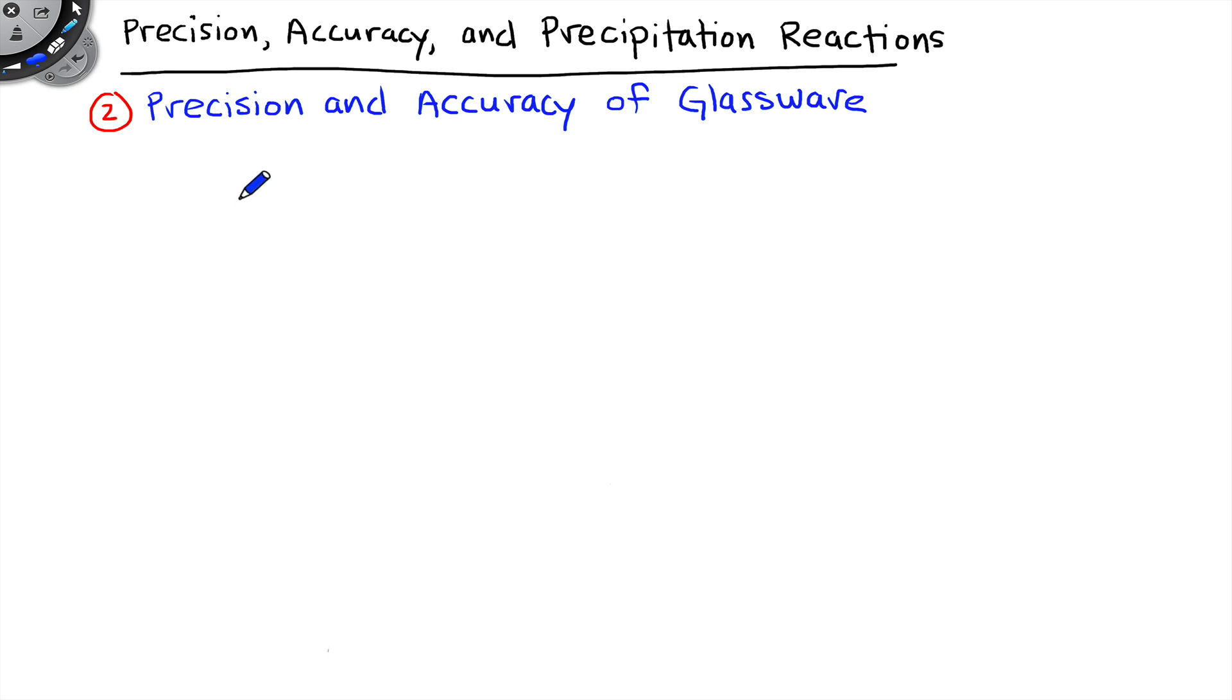In the second part of the experiment, we're going to explore the precision and accuracy of various types of glassware. Precision and accuracy are very important concepts in chemistry. So I did want to say a few words about these concepts, but I'm going to kick over to a video from CHEM 1310, the fundamentals experiment, where this same activity is done for the details on what actually happens in the lab. But let's talk about precision and accuracy.